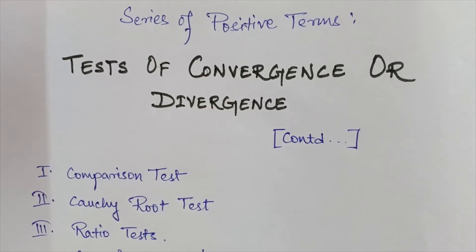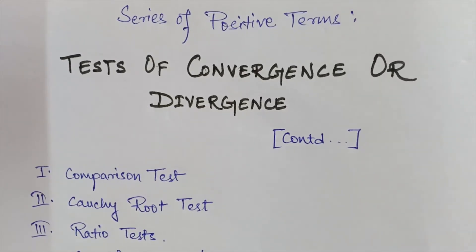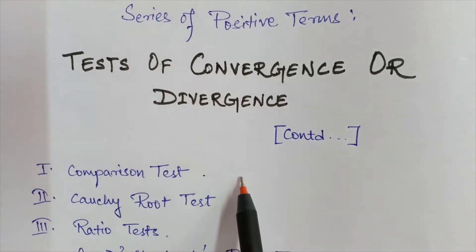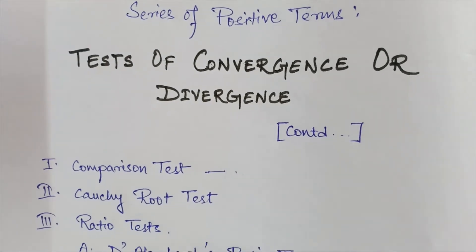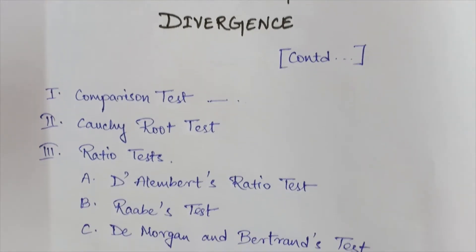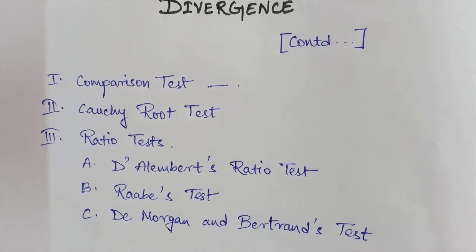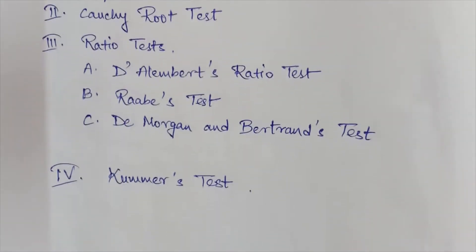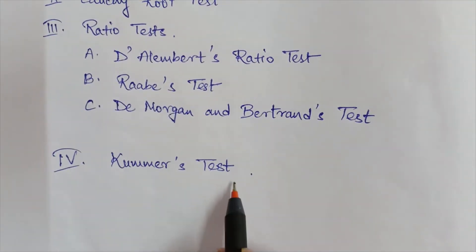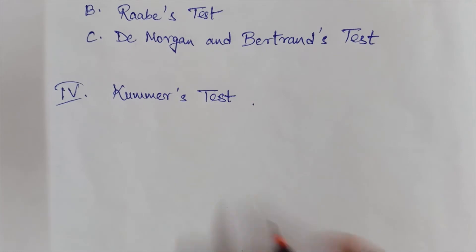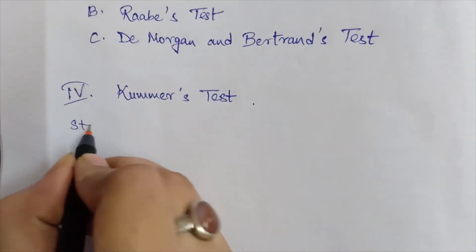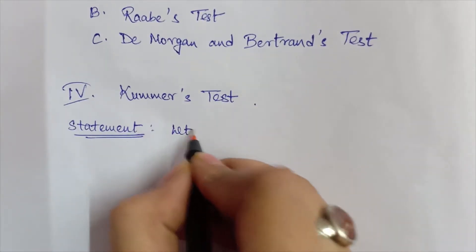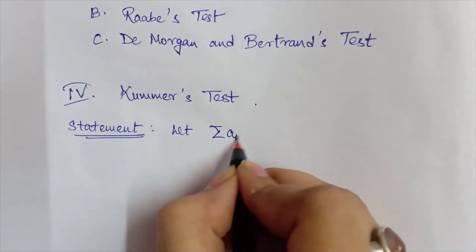In this series on tests of convergence or divergence for series of positive terms, we have already studied the comparison test in our first video and the Cauchy root test and ratio tests in our second video. In this video, we are going to study two more tests. The first one is Kummer's test.